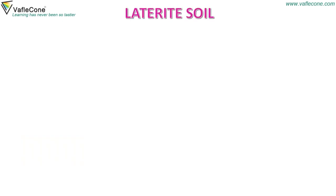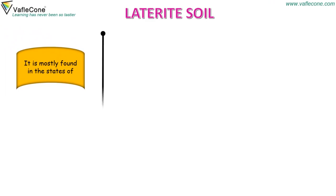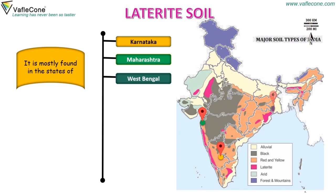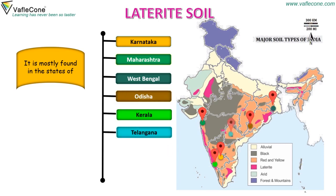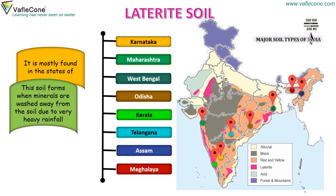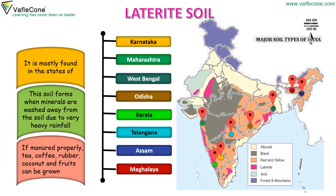Laterite soil is mostly found in the states of Karnataka, Maharashtra, West Bengal, Odisha, Kerala, Telangana, Assam and Meghalaya. This soil forms when minerals are washed away from the soil due to very heavy rainfall. If manured properly, tea, coffee, rubber, coconut and fruits can be grown.